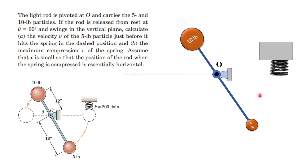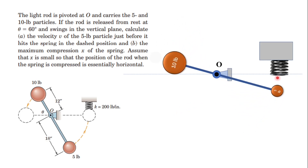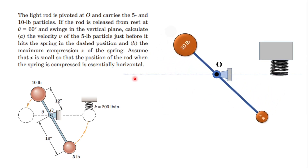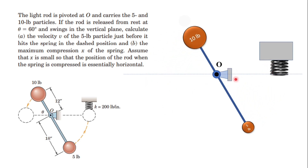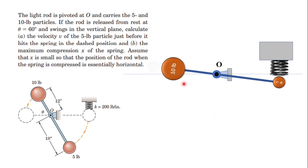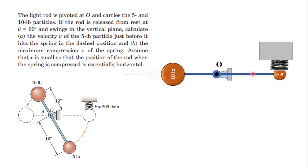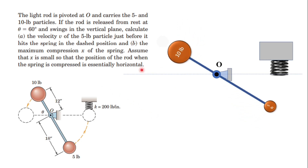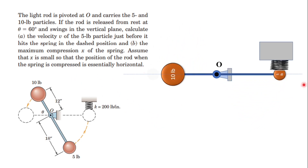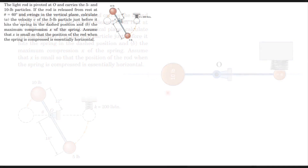The second part asks for the maximum compression x of the spring. The assumption is that if x is small, the position of the rod when the spring is compressed is essentially horizontal — meaning there is no change in the final position of the system when it strikes the spring. The working mechanism focuses on when the system collides with the spring and the impacts involved.